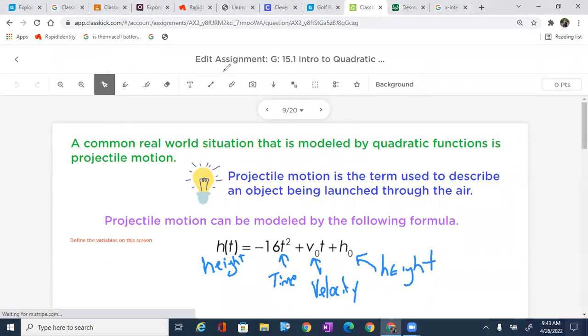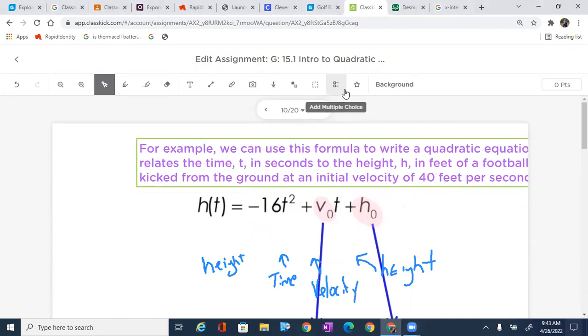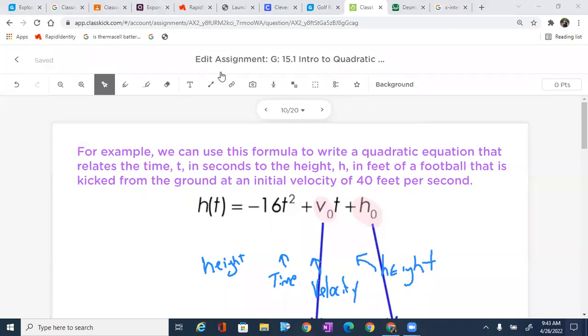So now let's just go ahead and apply it. And this is very much like the golfing problem. But we will look at a football. For example, we can use this formula to write a quadratic equation that relates the time t in seconds to the height h in feet of a football that is kicked from the ground at an initial velocity of 40 feet per second.